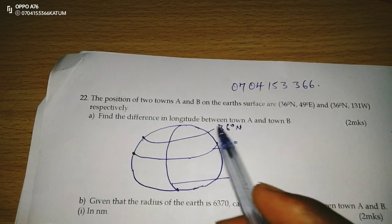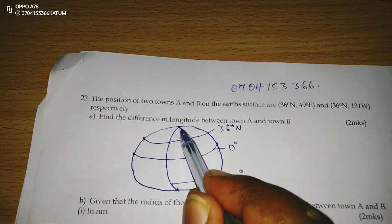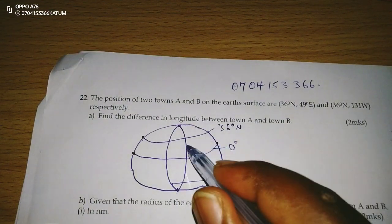we will have 49 in the east. East is to the right, 49 in the east.